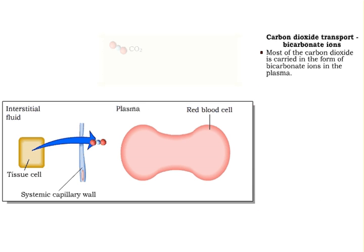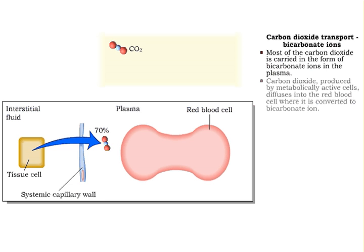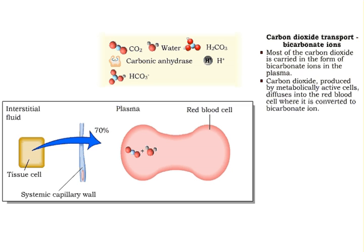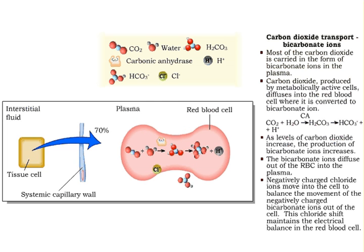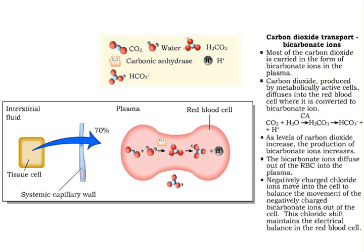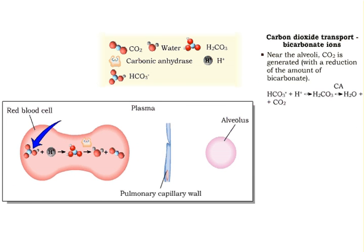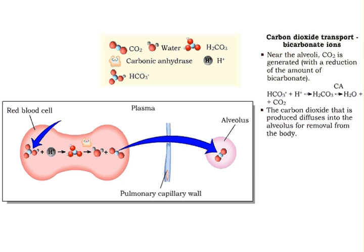Most of the carbon dioxide is carried in the form of bicarbonate ions in the plasma. Carbon dioxide in the plasma diffuses into the red blood cell, where it undergoes a chemical reaction catalyzed by the enzyme carbonic anhydrase, and is rapidly converted to bicarbonate ions. As levels of carbon dioxide increase, the production of bicarbonate ions increases. The bicarbonate ion diffuses into the plasma, where it is carried to the lungs. In order to maintain electrical balance in the red blood cell, the movement of the negatively charged bicarbonate ions out of the cell is balanced with the movement of negatively charged chloride ions into the cell. This process is called the chloride shift. Carbon dioxide produced near the alveoli diffuses into the alveolus for removal from the body.